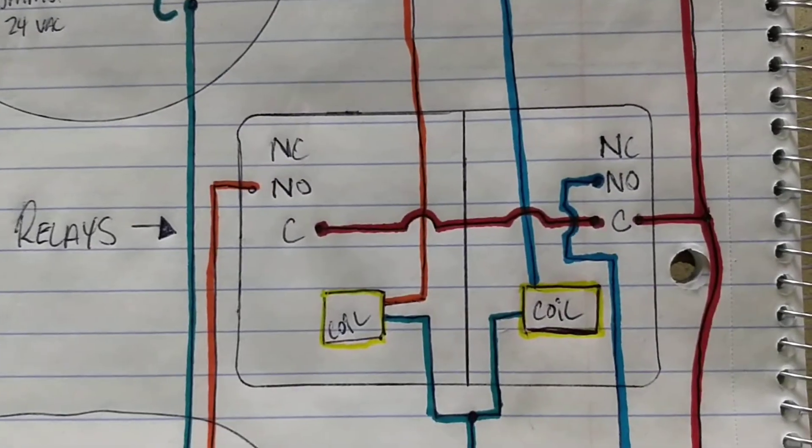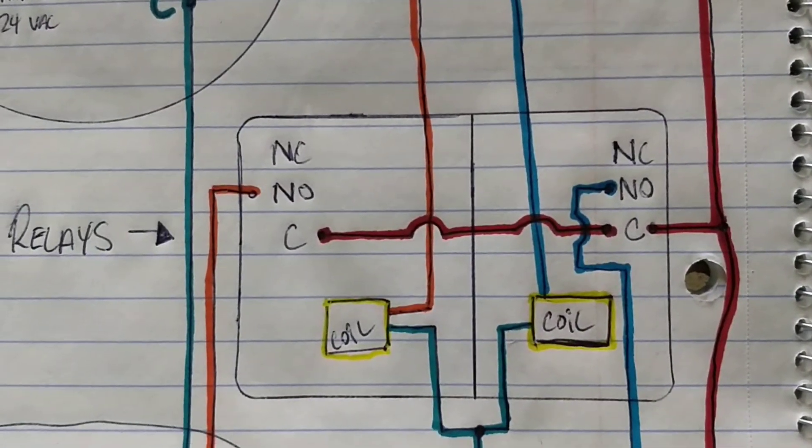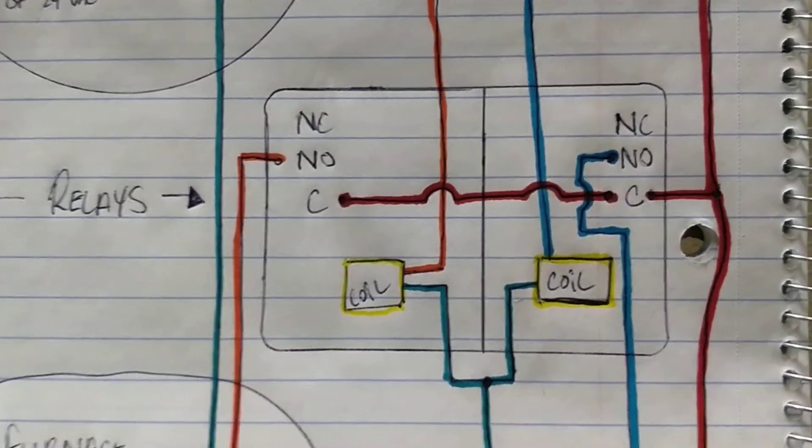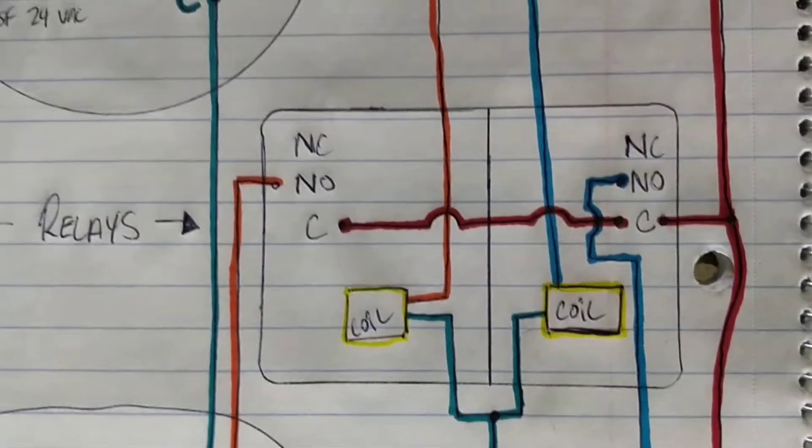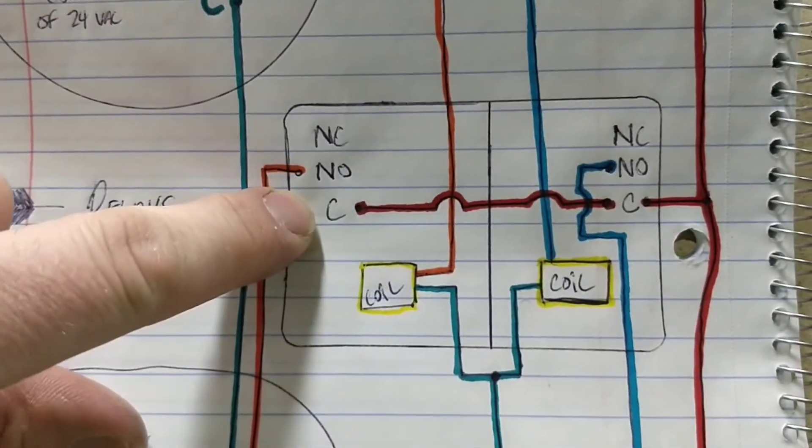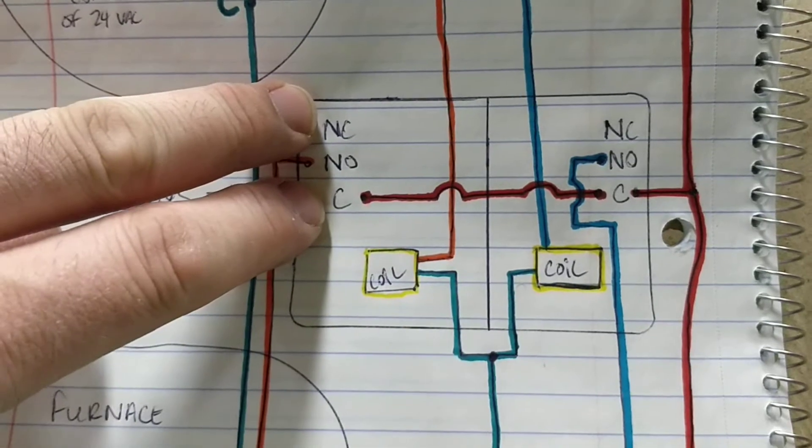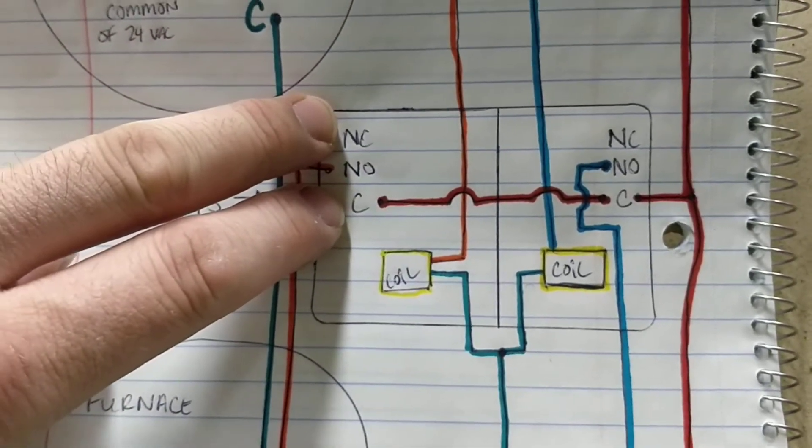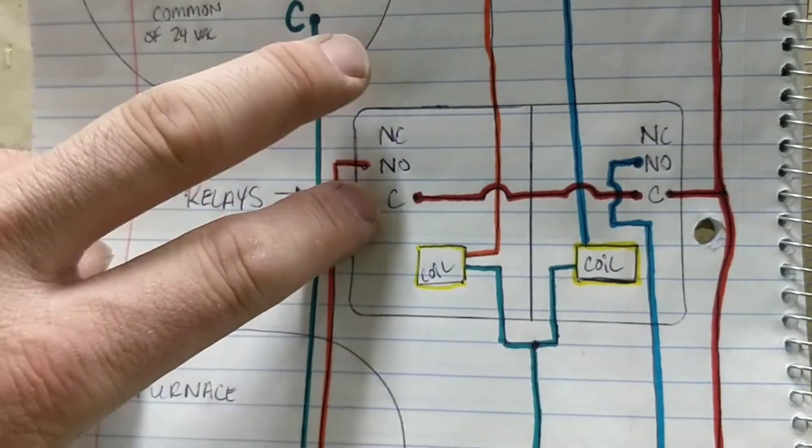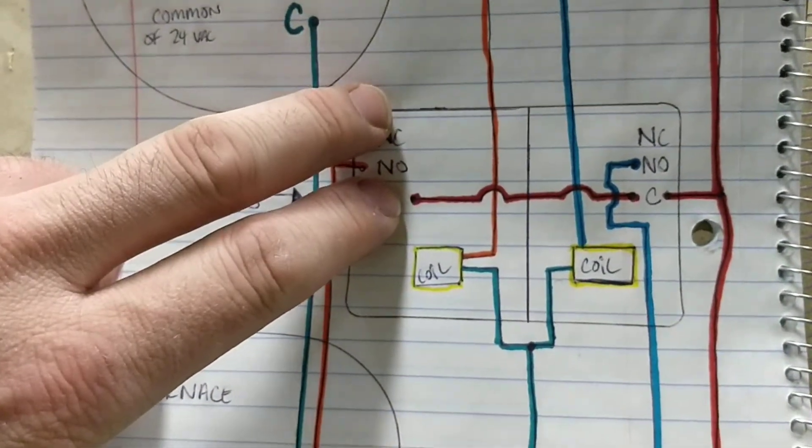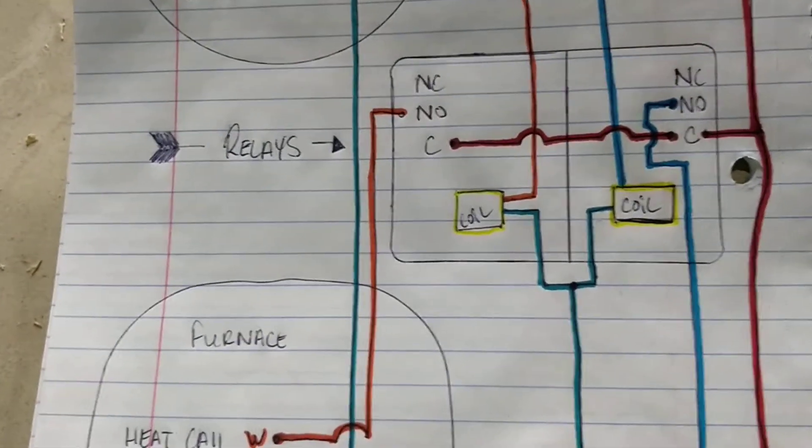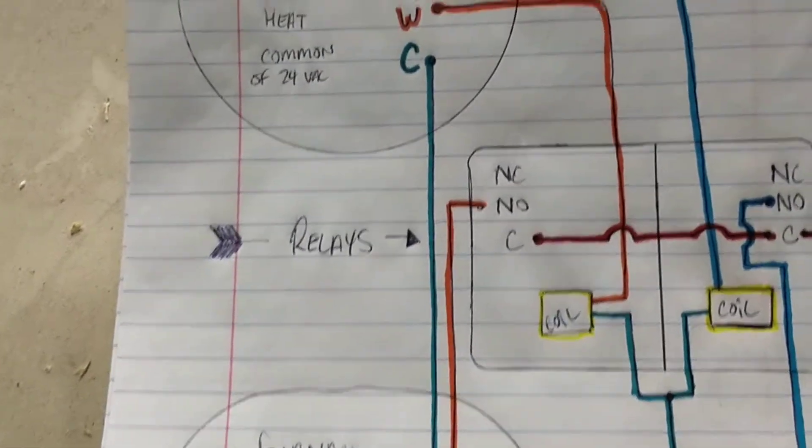The idea with the relays, your terminals are the common and the normally open, because the normally open and the common will make contact once the relay energizes. So the normally closed, which is this guy and that guy, if you were to put a meter on or check them, or if you hook up your connections to your furnace and they immediately turn on, you probably have this one and this one hooked up instead of this one and this one. So, you've been warned, I can't fix stupid and I can't help you if you're too stupid for yourself.